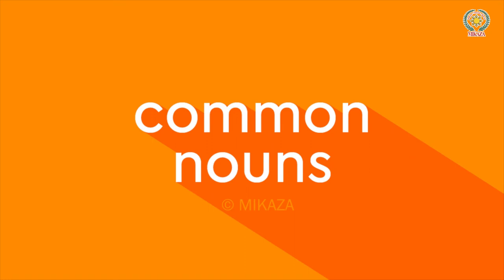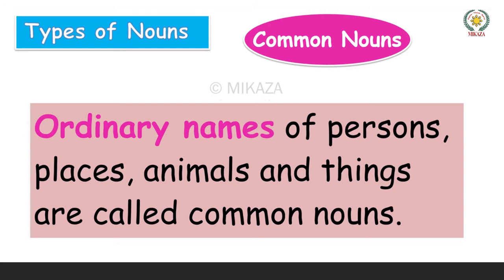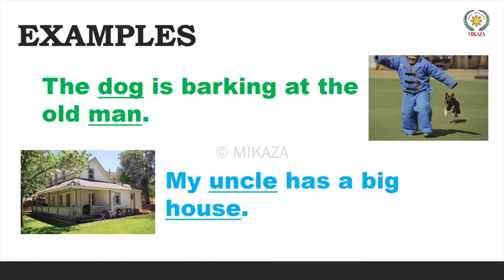The other type of noun we're going to discuss is common nouns. Common nouns are ordinary names of persons, places, animals, and things. For example: 'The dog is barking at the old man.' Here, dog has no name — it's just an ordinary dog. That is the reason why it is common. Man is also just an ordinary person, which is why it's common.